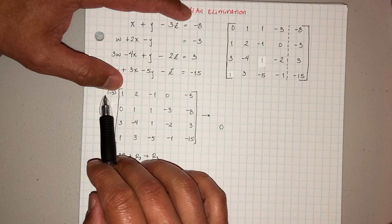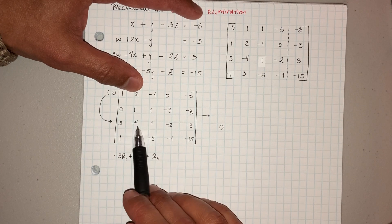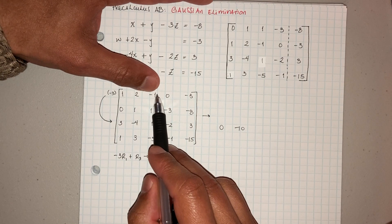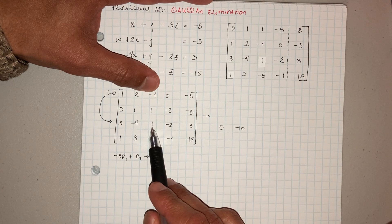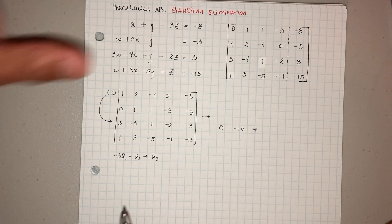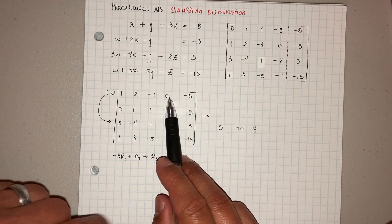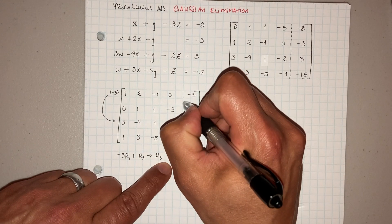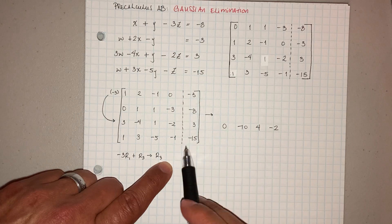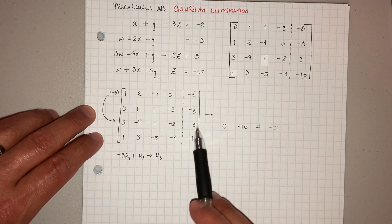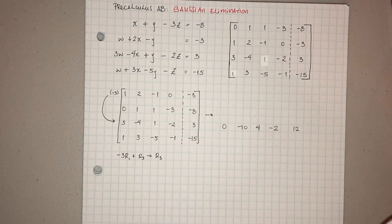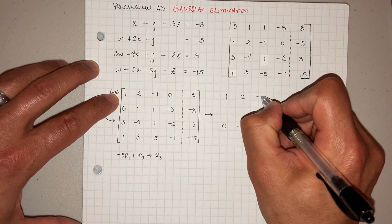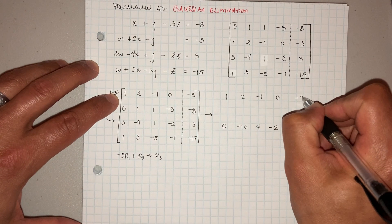Keep everything lined up. Negative 3 times 2 is negative 6, negative 6 minus 4 is negative 10. Negative 3 times negative 1 is positive 3, 3 plus 1 gives you 4. And then negative 3 times 0 is 0, 0 minus 2 is negative 2. Negative 3 times negative 3 is 9, 9 plus 3 is 12. So that goes over there.